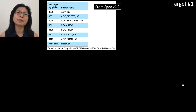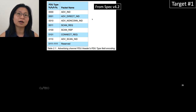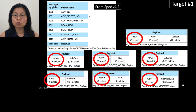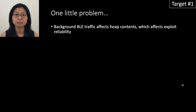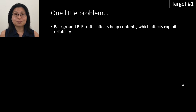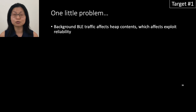Why did the programmer make this mistake? According to the Bluetooth 4.2 spec, all seven PDU types have at least 6 bytes of data, so a programmer might reasonably assume it's safe to subtract 6 from the length. However, a malicious packet can have a length smaller than 6. When I started developing the exploit, the problem was that background BLE traffic prevented me from controlling the heap contents reliably enough to make a reliable exploit.